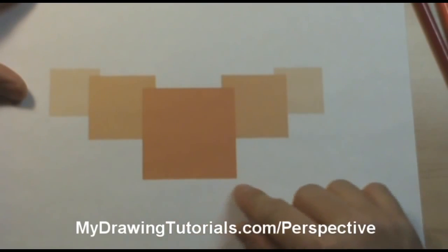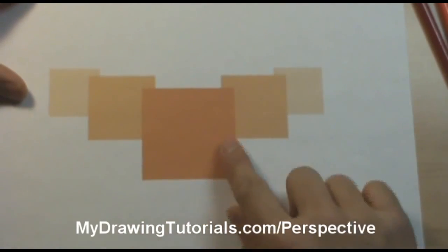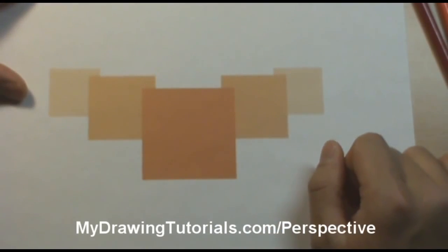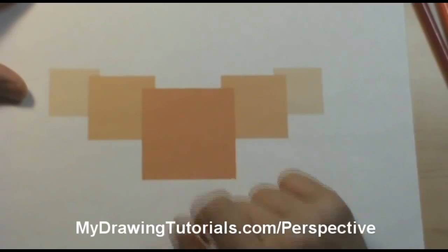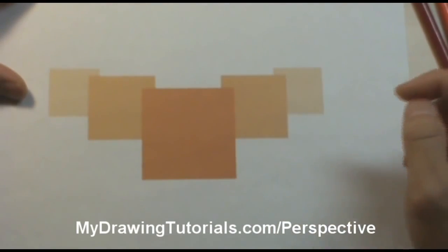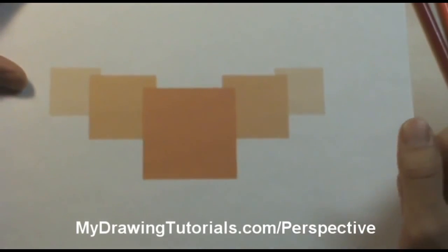We have object placement so the one that is closer to us is placed lower on the page. We have size variation so as it moves back the squares get smaller, and also the color becomes faded and less vivid. And then of course we also have overlap where the top square overlaps the subsequent ones. So you can see how powerful these techniques can be when you use them in combination with each other.